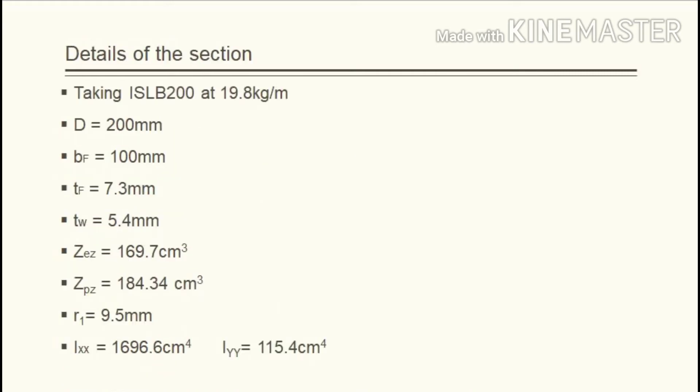Next is details of the section. Here we are taking ISLB 200, Indian standard lightweight beam 200, at a weight of 19.8 kilogram per meter. The details we can take from either SP6 or from steel tables. Depth of the section is 200 mm, breadth of flange is 100 mm, thickness of flange is 7.3 mm, thickness of web is 5.4 mm. Zed is equal to 169.7 centimeter cube. Zpz is equal to 184.34 centimeter cube. R1 is equal to 9.5 mm. Ixx is equal to 1696.6 centimeter raised to 4, and Iyy is equal to 115.4 centimeter raised to 4.